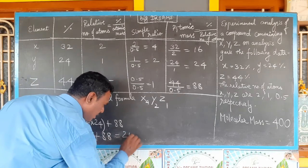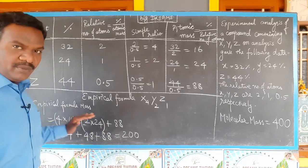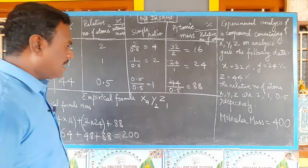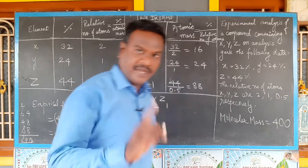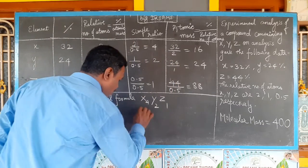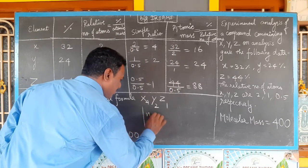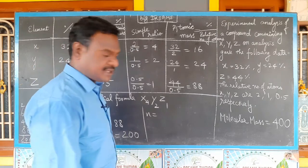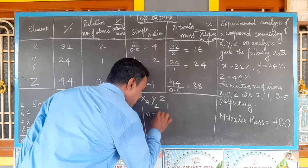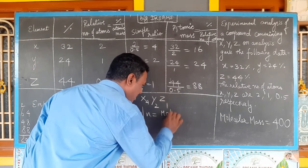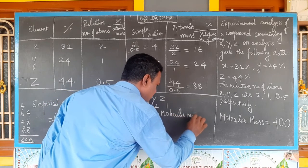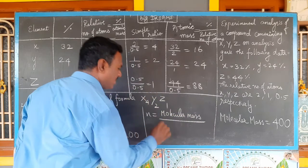That equals 200. So empirical formula mass is 200. Molecular mass is 400. Now we calculate the N value. N equals molecular mass divided by empirical formula mass, which is 400 divided by 200, so N = 2.